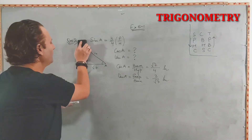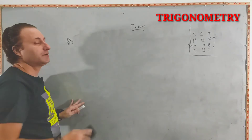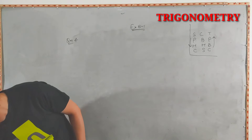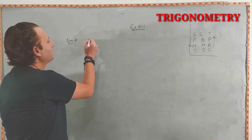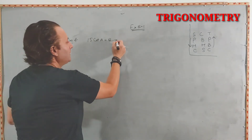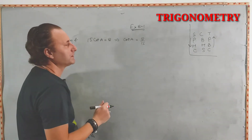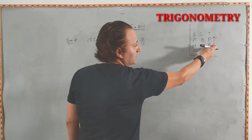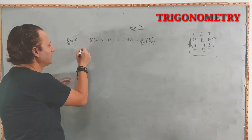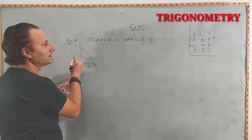Let's move to question number 4. It says 15 cot A equals 8, so cot A equals 8 upon 15. Cot is base upon perpendicular, so base equals 8 and perpendicular equals 15. We draw a right-angle triangle with angle A and the hypotenuse is missing.